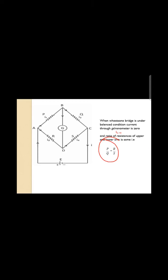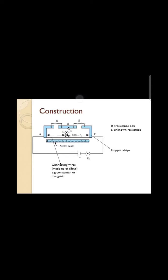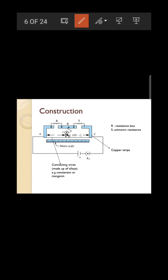In the construction of the meter bridge, copper strips are used in which two resistances are connected. Between these copper strips, a one-meter wire is stretched, made of constantan or manganin alloy, because these alloys have a very low temperature coefficient of resistivity — meaning resistance doesn't vary much with temperature.